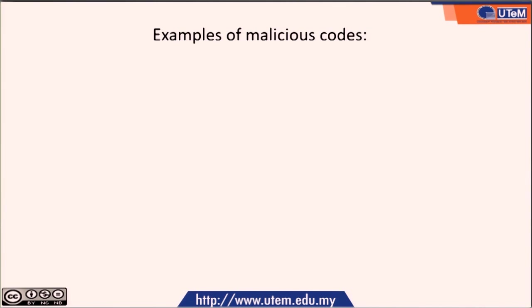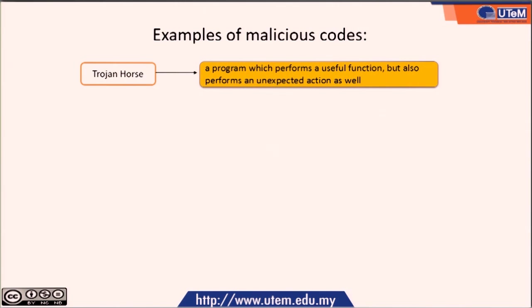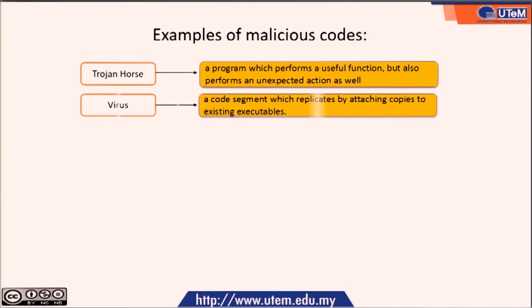Next, we look in detail at these different types of malicious codes. The first one is the Trojan Horse — a program which performs a useful function but at the same time also performs an unexpected action. The second one is the Virus — a code segment which replicates by attaching copies to existing executables. It is divided into two types: transient, which only executes when the attached program runs, and resident, where once executed, the virus stays in memory until triggered again.